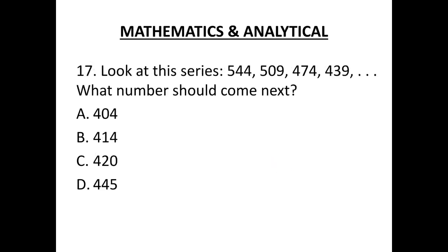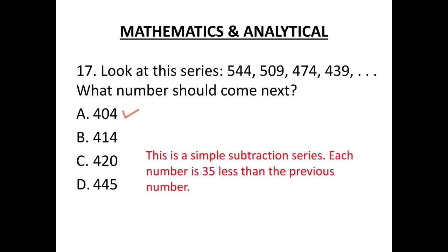Number 17. Look at this series. 544, 509, 474, 439. What number should come next? In these kind of questions, I always instruct that please check if they are descending or ascending in the order. If descending, then definitely it has to be subtraction or division. If ascending, then it has to be addition or multiplication. The series is descending. The correct option is 404. This is simple subtraction series. Each number is 35 less than the previous number.